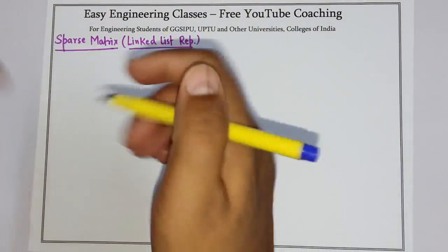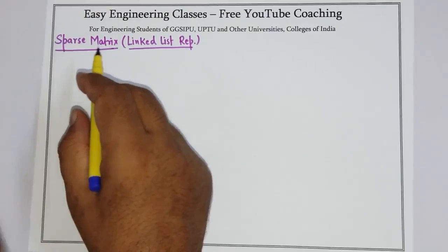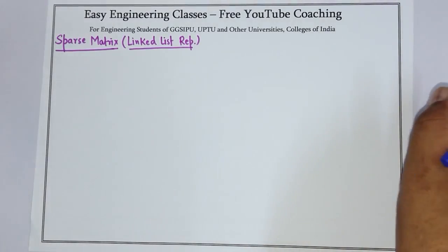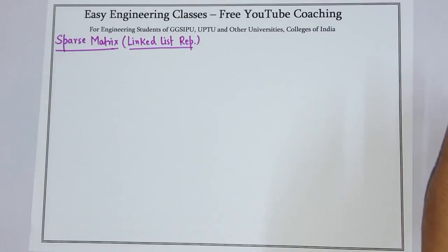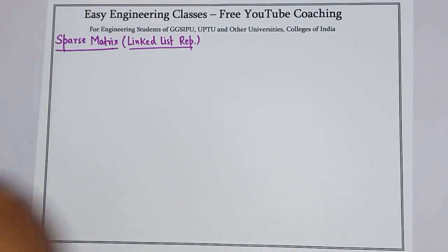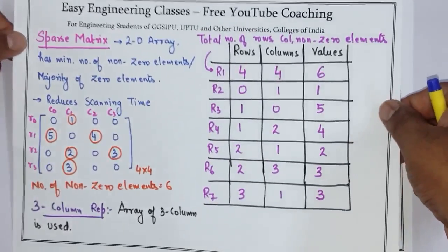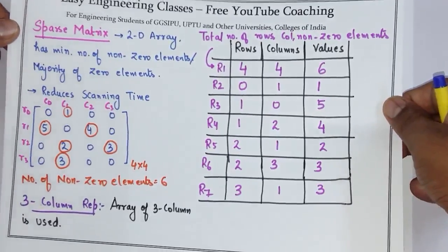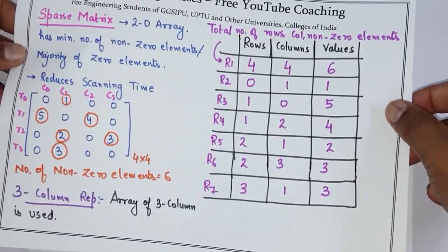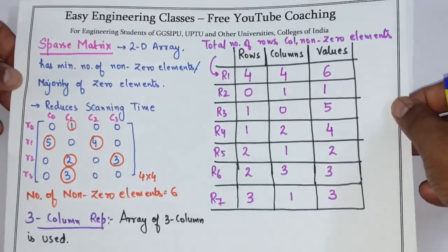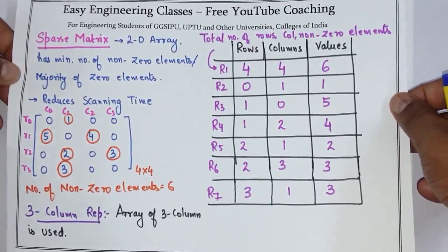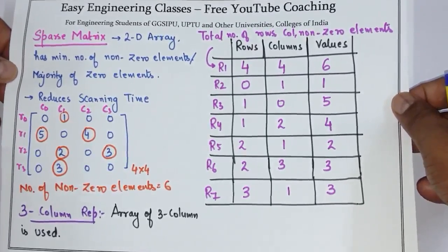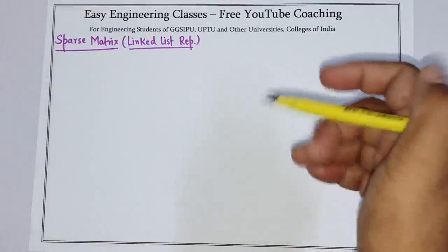Hello students, today I am going to show you how you can represent a sparse matrix using a linked list. In the previous class we have seen how to implement sparse matrix using three column representation, so I am going to take the same example and we will see how to represent it using three column linked list representation.